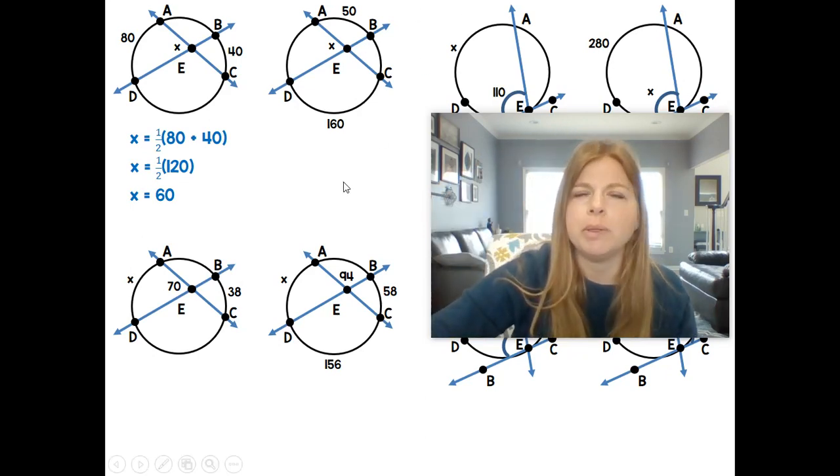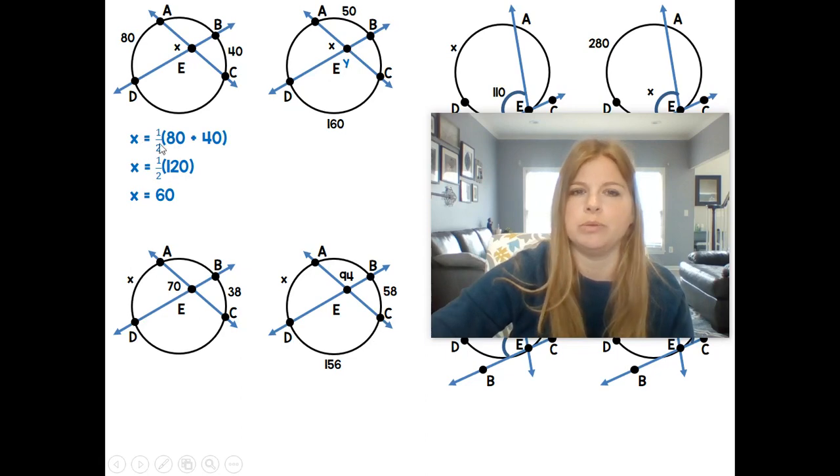So what we would want to do first is solve for Y. Let's figure out what this angle would be, and let's use the same setup we used here. So if I solve for Y, and I follow that step, Y is equal to one half the sum of 160 plus 50, and I end up getting 105.